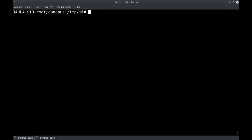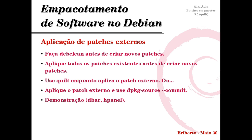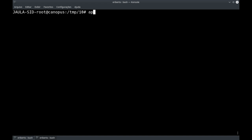Dá para você fazer um wget desse endereço todo e você vai receber o arquivo patch lá dentro do seu código. Nós vamos fazer então essa aplicação de patch externo. Para isso, tem que lembrar do seguinte: aplicar todos os patches existentes antes de criar novos patches, fazer um debclean antes de tudo, e usar quilt enquanto a gente faz a aplicação. Nós vamos fazer duas demonstrações: usando o pacote debar e o hpanel. Começamos pelo debar com apt-source debar.